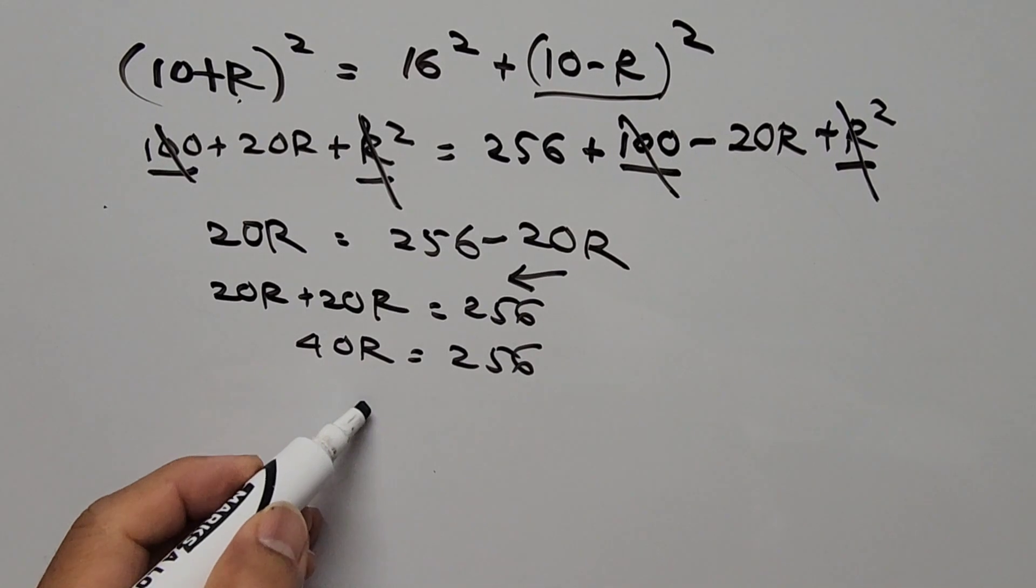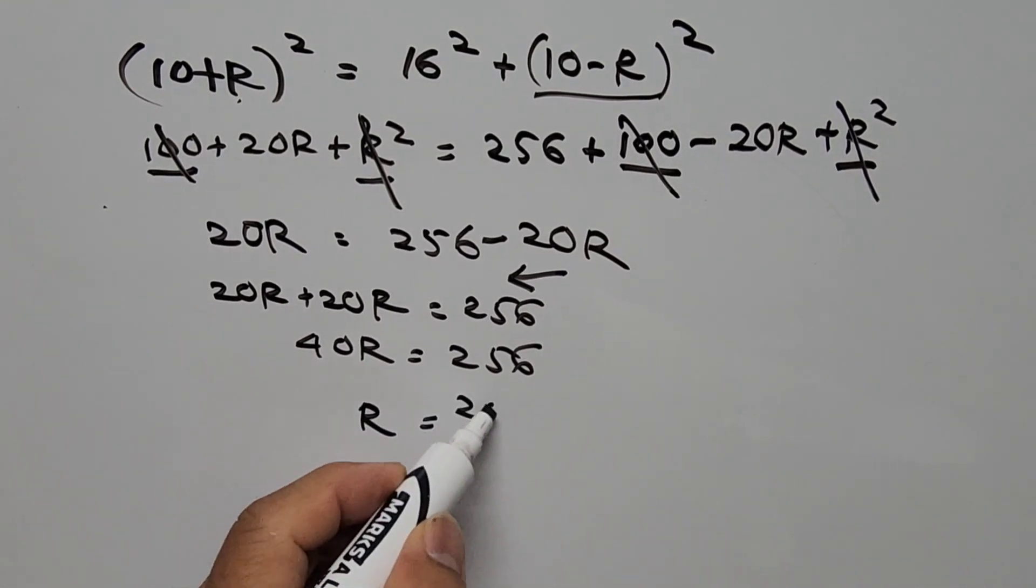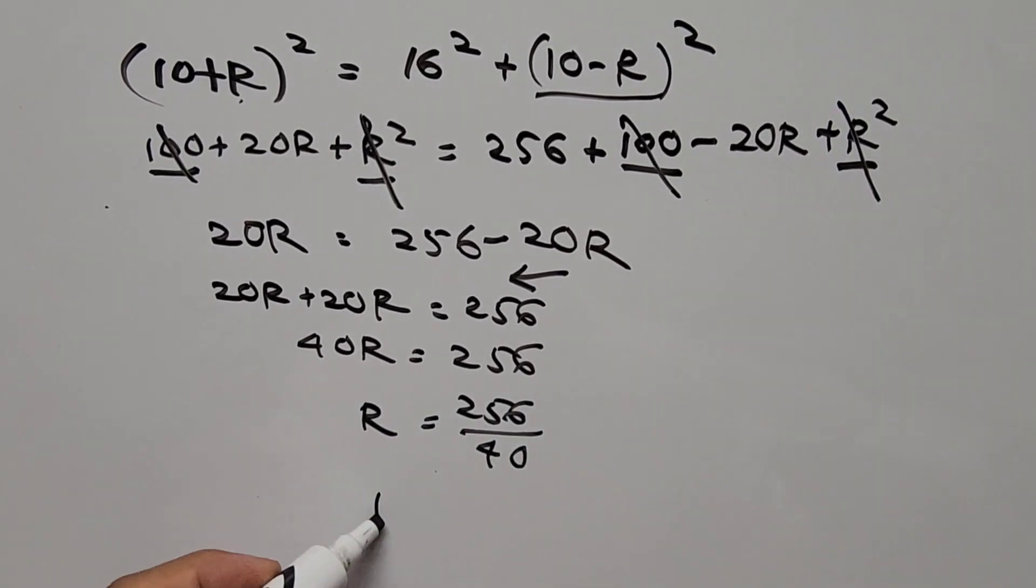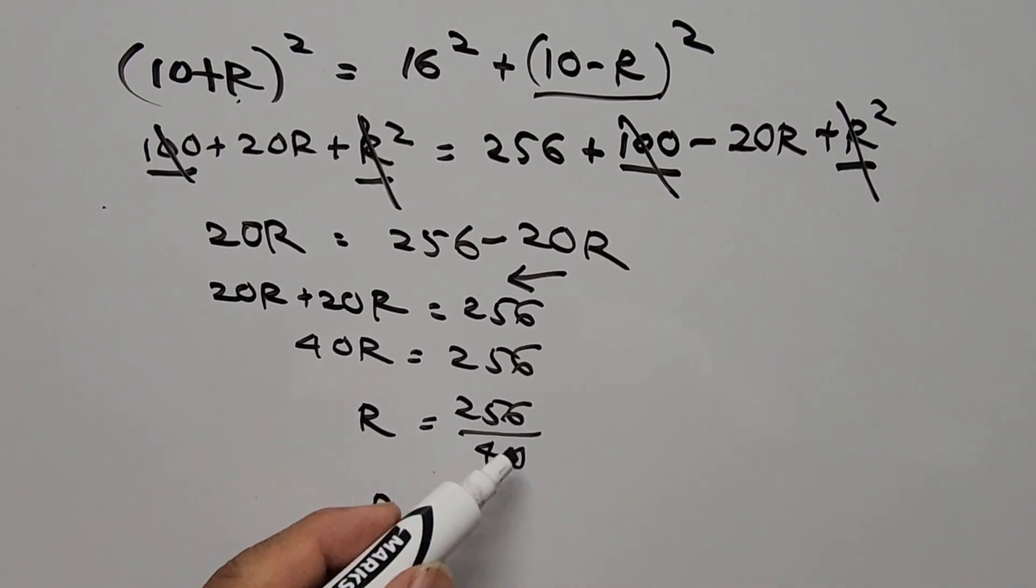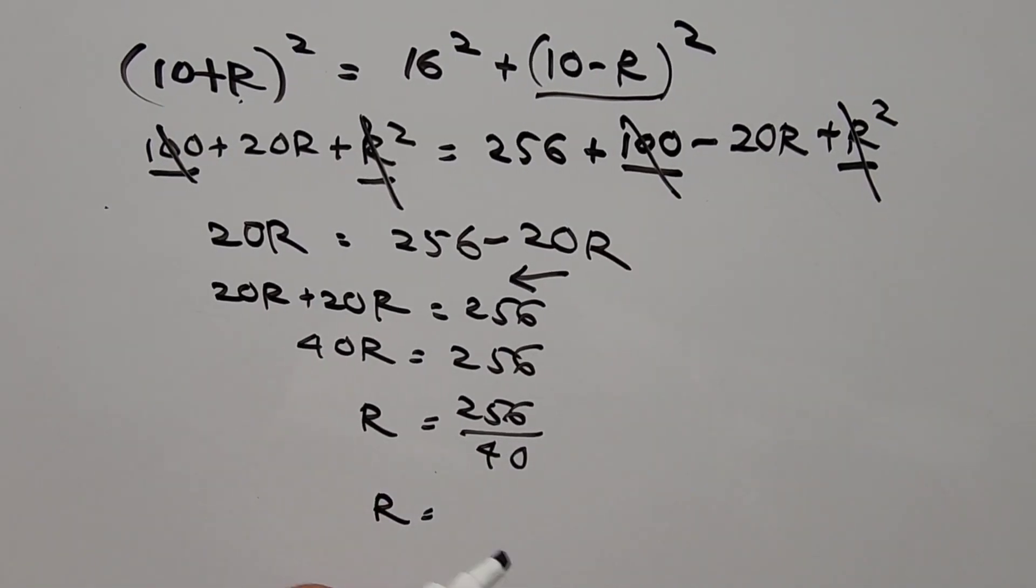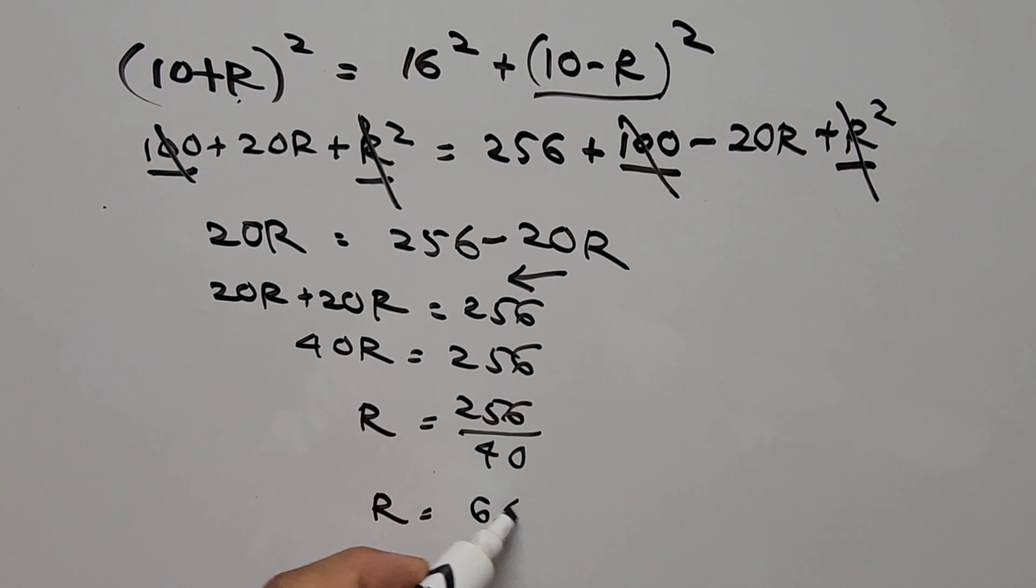So R is equal to 256 over 40. So R is 256 divided by 40 equals 6.4 units, or 6.4. Our final answer.